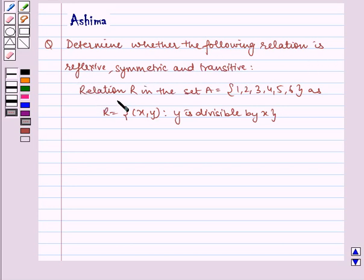Given relation R in the set A = {1, 2, 3, 4, 5, 6} as R = {(x,y) : y is divisible by x}.